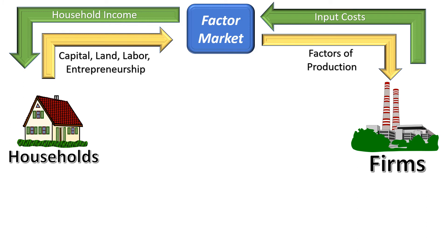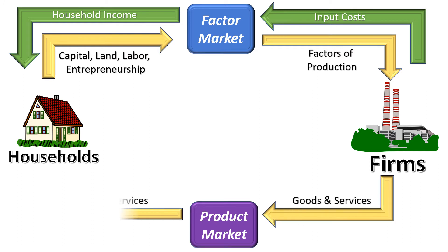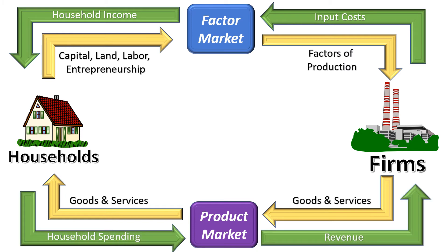Once households have income and businesses have factors of production, that brings us into the second half of the circular flow model, which is the product market. The product market is where businesses sell their goods and services to households. Once a business has used the factors of production to make things, the households buy those things. From the household perspective the money they spend is household spending, drawn from their household income. From the business side, they call that revenue — all the money they bring in from selling the goods or services they produce.